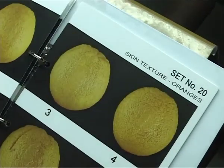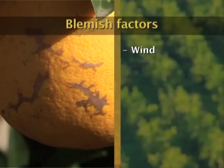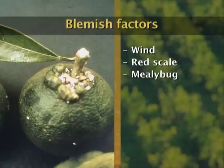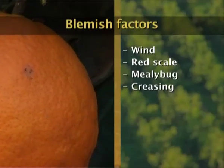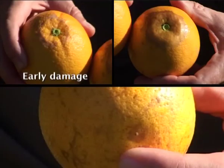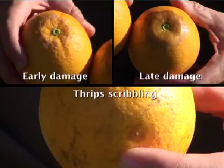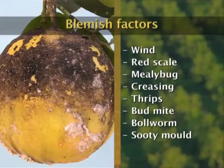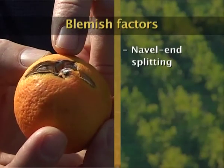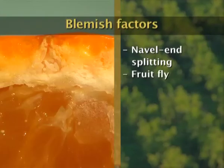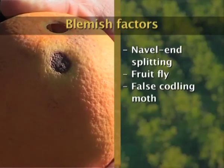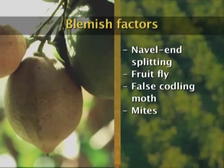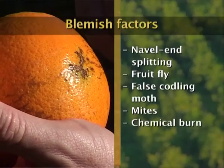Blemish factors which should be recorded are factors such as wind, red scale, mealybug, creasing, thrips damage — and one can categorize this thrips damage as early damage, late damage, or thrips scribbling — bud mite damage, bollworm damage, sooty mold, navel end splitting, fruit fly, false codling moth, and a range of mites: flat mite, rust mite, silver mite, and then other factors such as chemical burn.